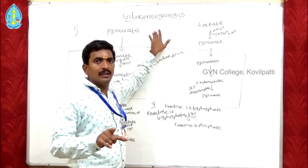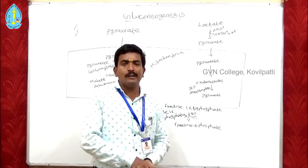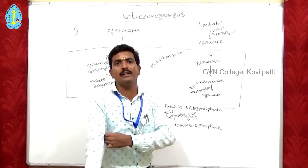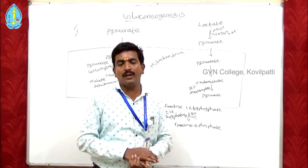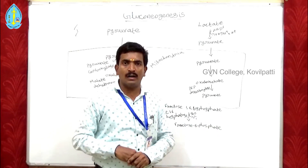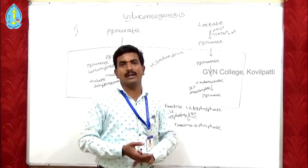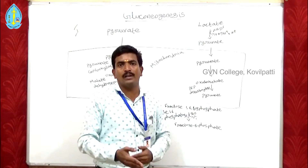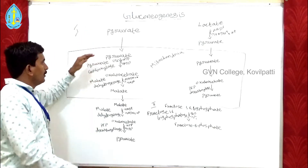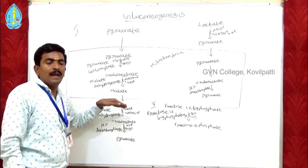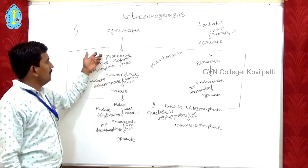One important thing to remember: for gluconeogenesis, both cellular compartments are important. Both the mitochondrial enzyme and the cytoplasmic enzyme are involved. The pyruvate molecule present in the cytosol — converted from glycolysis or from non-carbohydrate molecules such as lactate or alanine — enters the mitochondria. In the mitochondria, the first step is that pyruvate is converted into oxaloacetate by the mitochondrial enzyme pyruvate carboxylase.